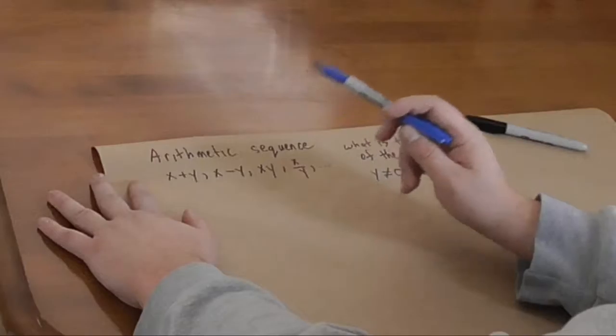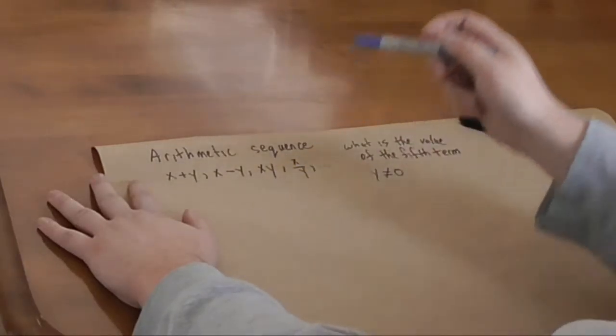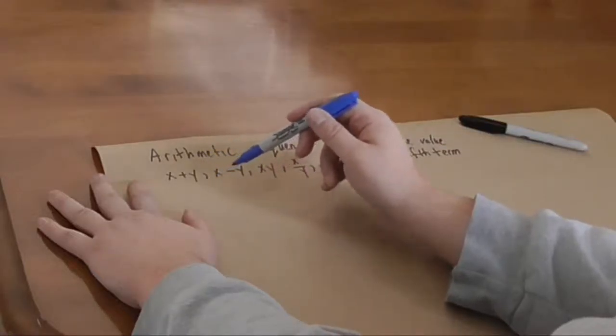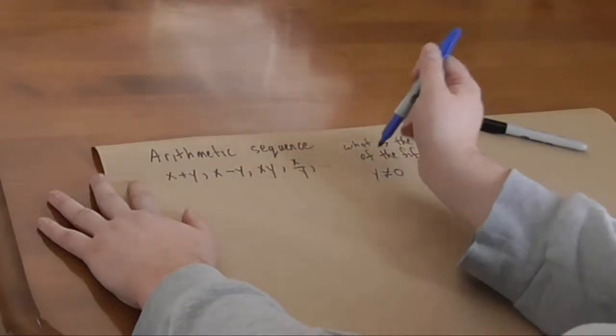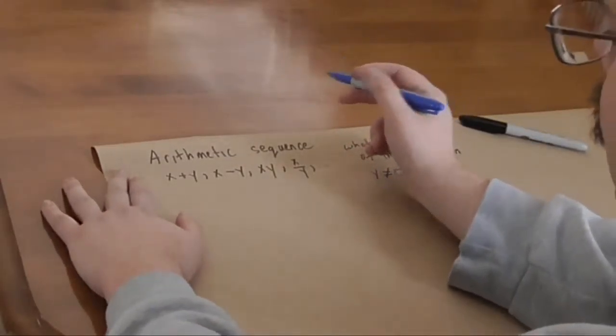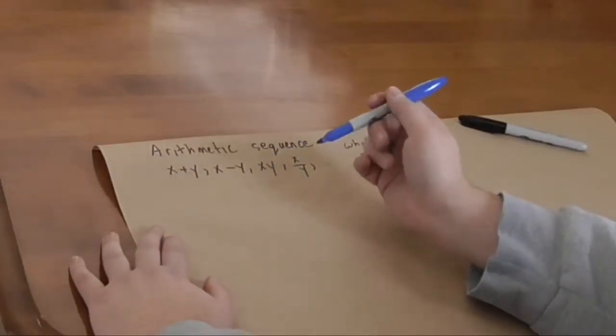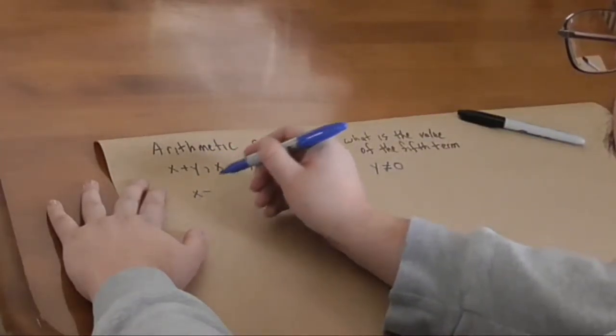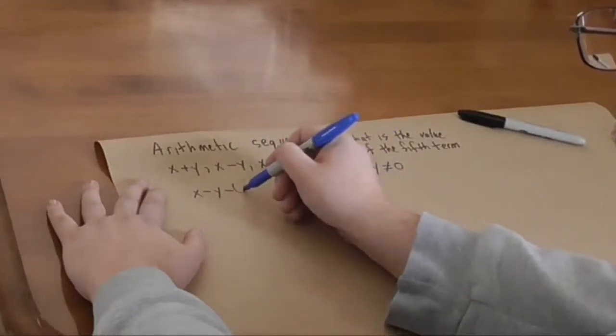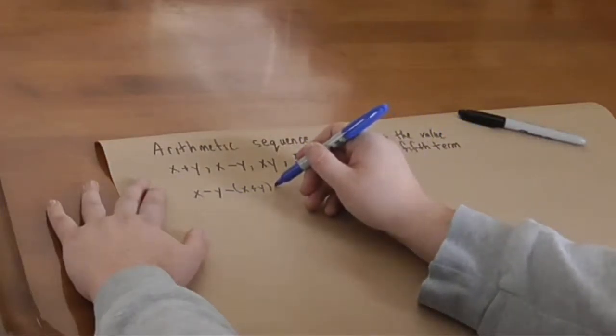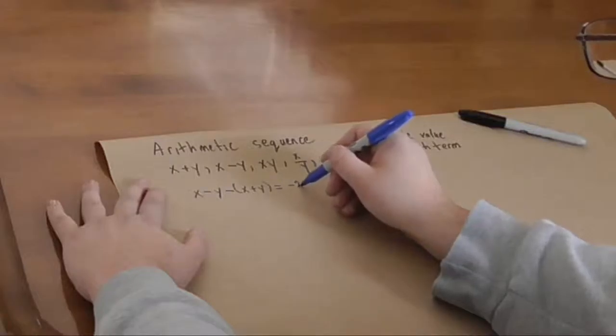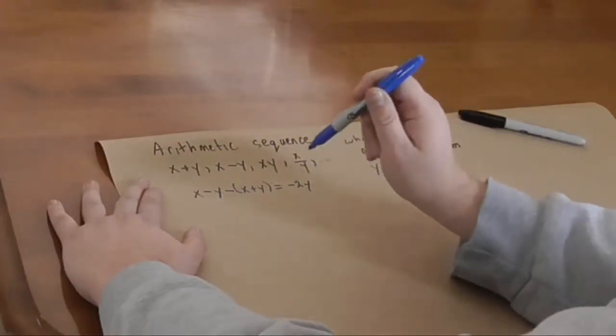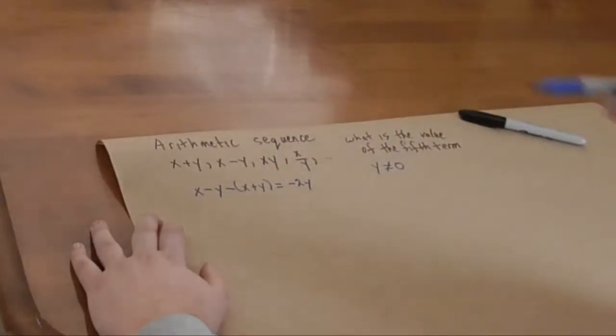We also know, by the definition of an arithmetic sequence, that the difference between the first two terms, the second and third terms, the third and fourth terms, fourth and fifth terms, is all the same. We can do some simple checking here. We can just subtract the first two terms, which is x minus y minus x plus y, which simplifies out to minus two y.